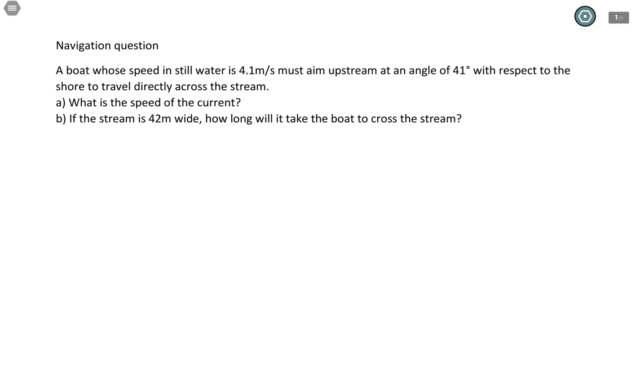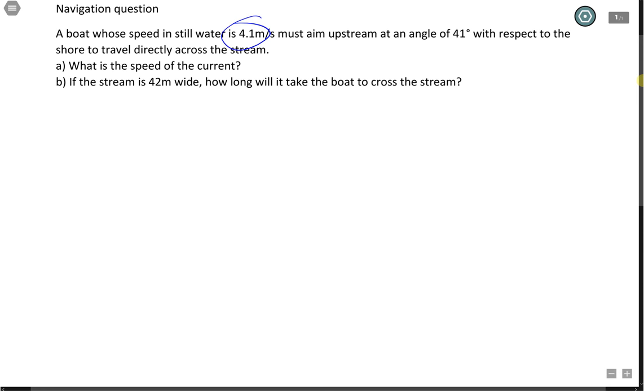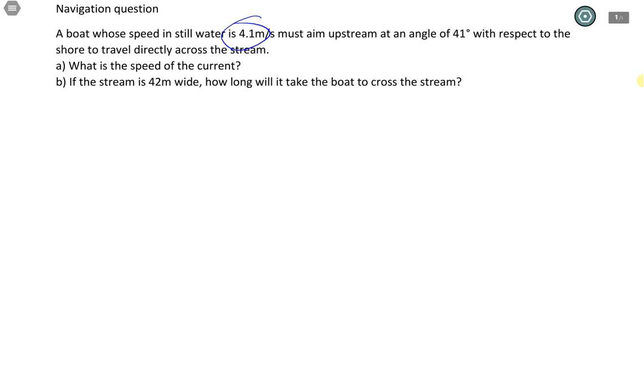Welcome back to another episode of Physics. In this video, we're going to go over a navigation question. In our question, we have a boat whose speed in still water is 4.1 meters per second. It must aim upstream at an angle of 41 degrees with respect to the shore to travel directly across the stream. What is the speed of the current?